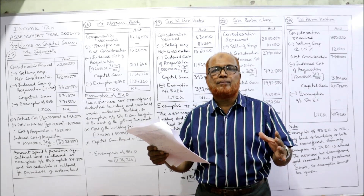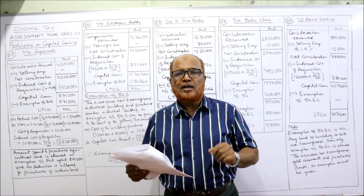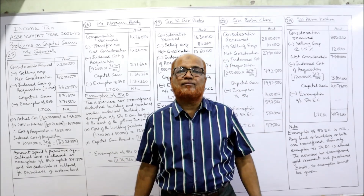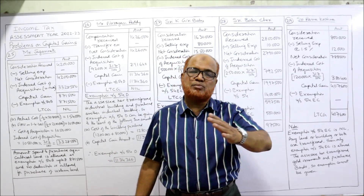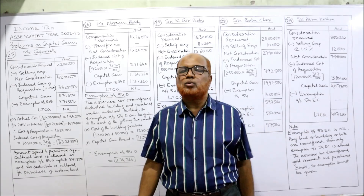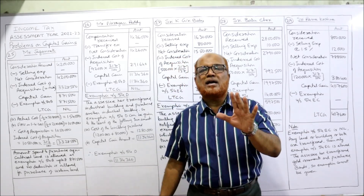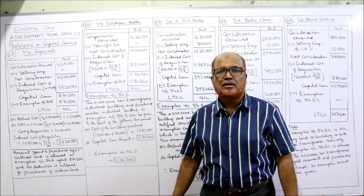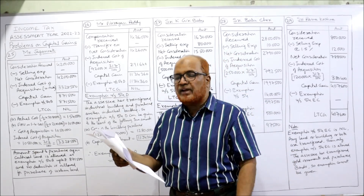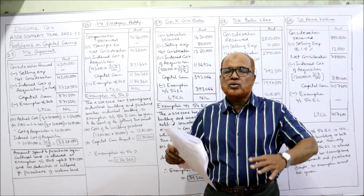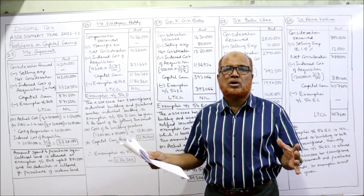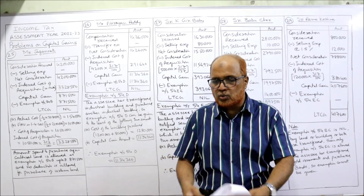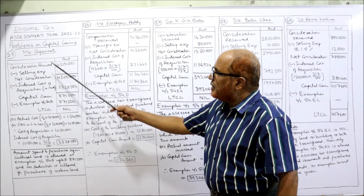The assessee purchased a piece of agricultural land for 3 lakh 8,000 — that was the actual cost in 1975. If any asset is purchased before 1/4/2001, the assessee can choose the higher of the following two: actual cost or FMV. Here FMV is given as 21 lakh. Also note that the complete property is not sold — only half of the property is sold for rupees 42 lakhs.